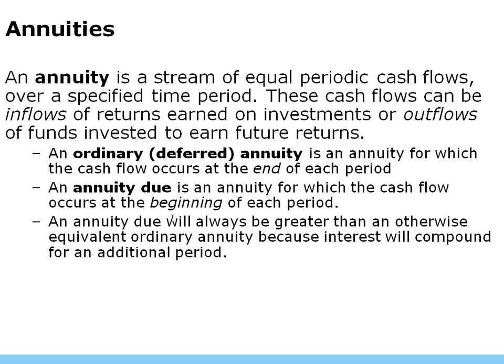Now let's talk about annuity — a stream of equal periodic cash flows. Examples include $200 every week for 52 weeks, or $5,000 a year for 20 years. An ordinary annuity means cash flows occur at the end of each period — like getting your paycheck at the end of two weeks. Annuity due means the cash flow comes at the beginning of the period — you'd get paid before you even work. An annuity due is always greater than the ordinary annuity given the same inputs.